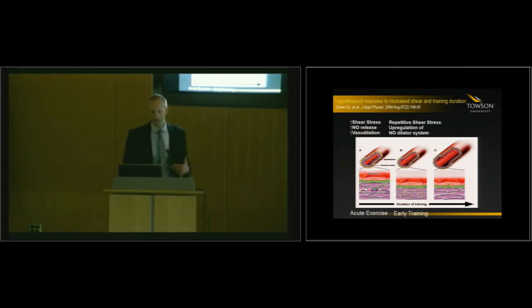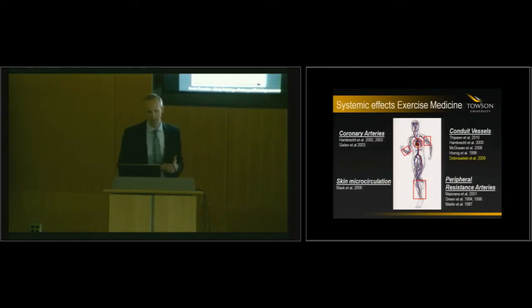With repetitive bouts of exercise that occur over time, we believe this increased shear stress leads to increased nitric oxide release, which leads to vasodilation. With early training, within weeks of training, this repetitive shear stress, if your prescription is correct, leads to an upregulation of the nitric oxide dilator system, making this system work more effectively. Then over a period of time, over weeks and months, we have nitric oxide-mediated remodeling. The nitric oxide release goes back to normal, but we have very large vessels that are able to buffer and accommodate any increases in shear stress and keep the vascular system healthy.